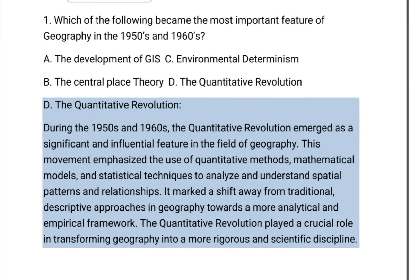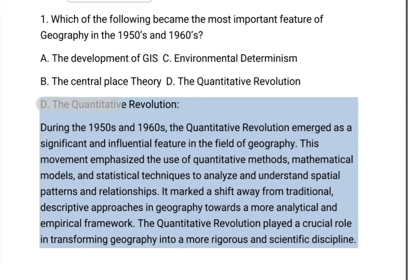The answer is D. The Quantitative Revolution. During the 1950s and 1960s, the quantitative revolution emerged as a significant and influential feature in the field of geography. This movement emphasized the use of quantitative methods, mathematical models, and statistical techniques to analyze and understand spatial patterns and relationships. It marked a shift away from traditional descriptive approaches towards a more analytical and empirical framework, transforming geography into a more rigorous and scientific discipline.